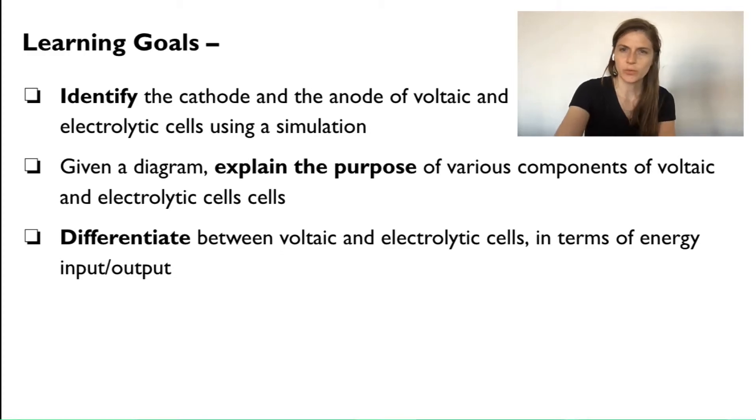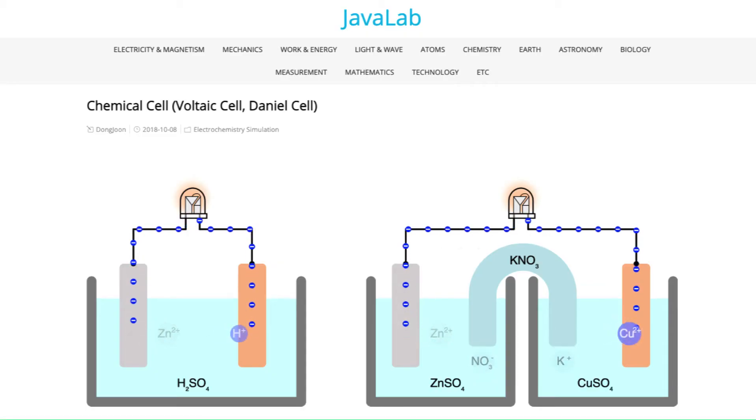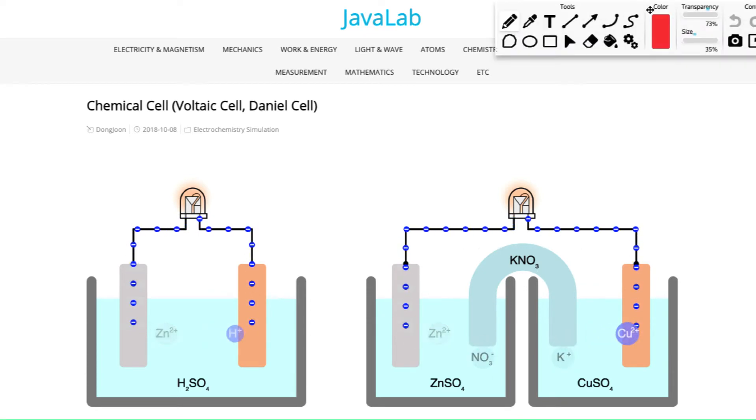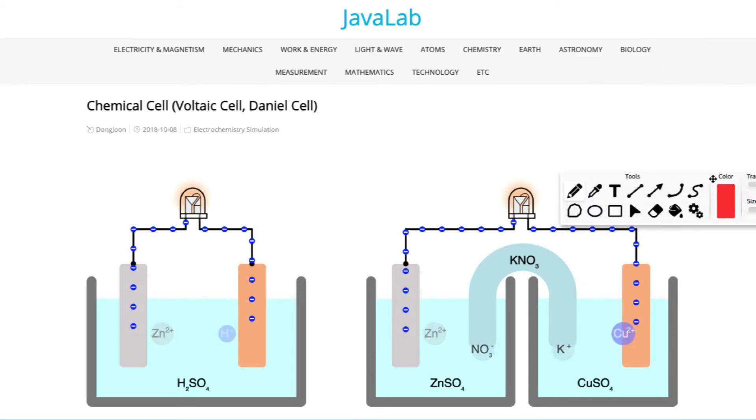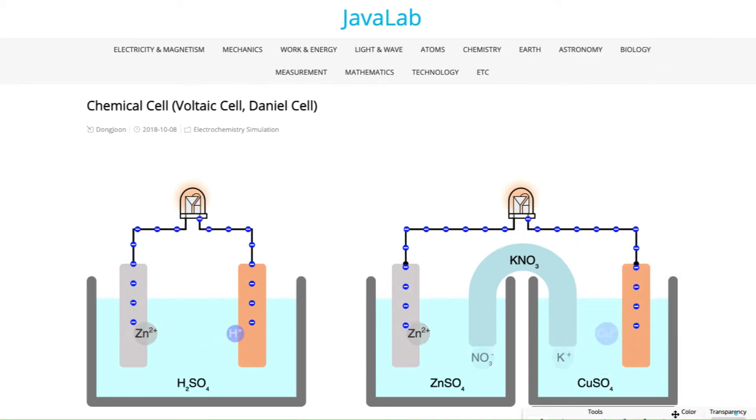So let's start with our simulations. I was really excited to find these simulations. They're free and online and open access to anyone who would like to view or use them and I will make sure to put a link to the simulation in the description for this video so that you can get to it. This is at javalab.org and we're looking at a chemical cell, voltaic cells sometimes called the Daniel cell. And I am going to do some annotating here so we can think about what we are noticing on our simulation.